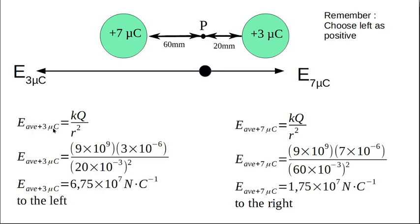The field from the 3 microcoulomb charge: E = kQ/r². That's 9×10⁹ multiplied by 3×10⁻⁶, divided by (20×10⁻³)², because the charge is 20 millimeters from point P. This gives 6.75×10⁷ N/C to the left — that's the unit of field strength.